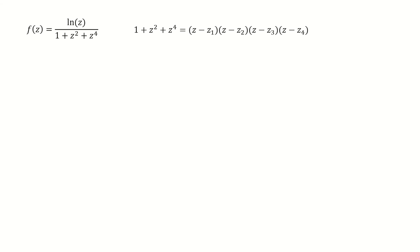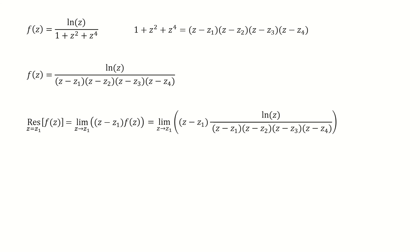Here is our function. Note for the denominator can be factorized into this form. After plugging in the denominator, we got here. Because z1 is a simple pole for this function, we just calculate the limit here. After plugging in f(z), we got here. These two terms cancel out. After plugging in z equals z1, we got here.